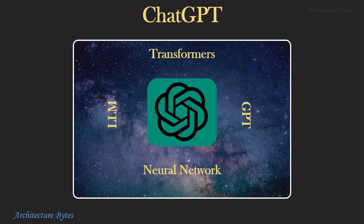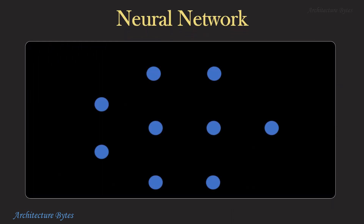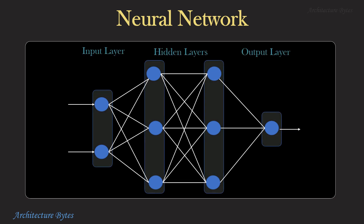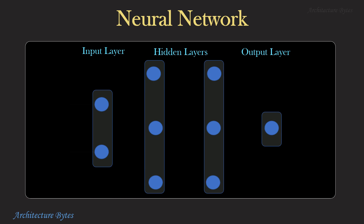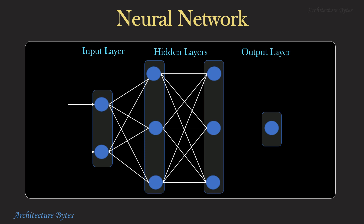Let's start with neural networks. Here is a diagrammatic representation of a neural network. Every node here is a neuron — a mathematical function that calculates an output given an input. It is the connections between neurons that create a powerful neural network. Every neuron is connected to a few of its peers, and the strength of each connection is based on a numerical weight that determines the degree to which the output of a neuron will be taken into account as input to the next neuron.